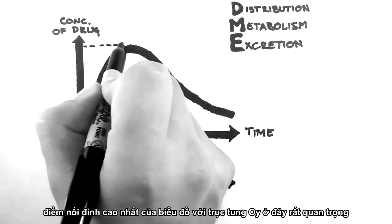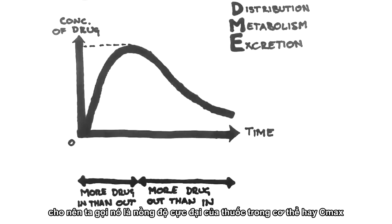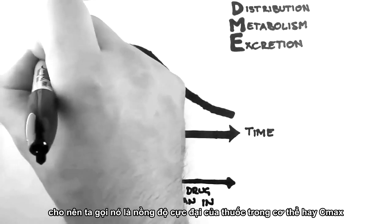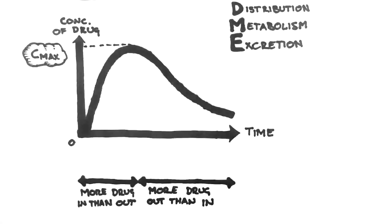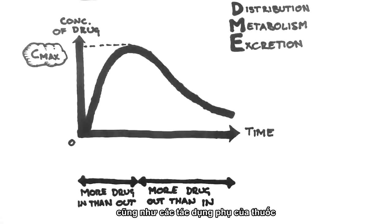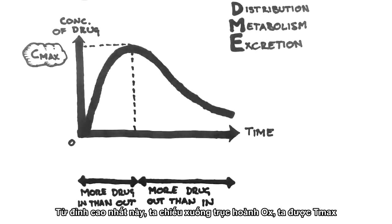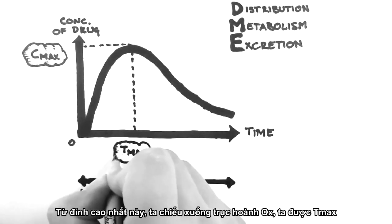This point at the top of the graph is important because it is the highest concentration of drug in the body. Therefore, we call this the maximum concentration, or Cmax. This is important because knowing the maximum concentration can help predict the therapeutic benefit and also the likelihood of side effects. The time at which the maximum concentration occurs is called Tmax.